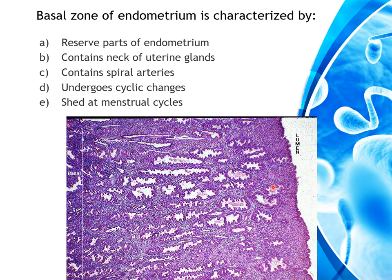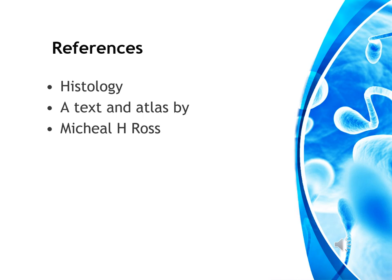The basal zone of the endometrium is characterized by which of the following? It is the reserve part of the endometrium — true. It contains necks of glands — false; necks are in the proliferative zone; bases of glands are in the basal zone. It contains spiral arteries — false; spiral arteries are in the proliferative zone. It undergoes cyclic changes — false; cyclic changes occur in the proliferative zone. It is shed at menstrual phase — false; the proliferative area is shed; the basal zone remains. The answer is that it is the reserve part of the endometrium.